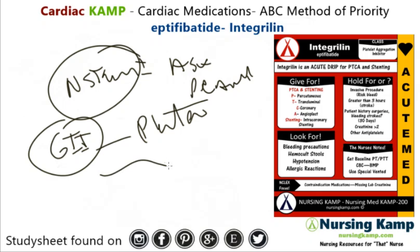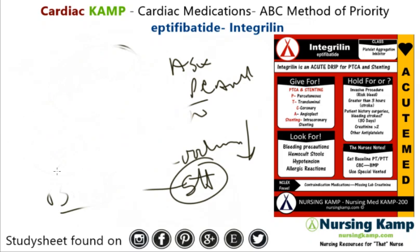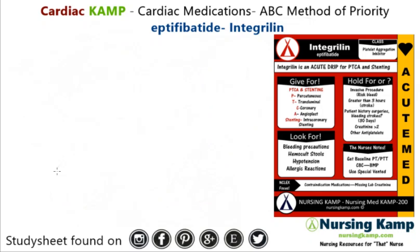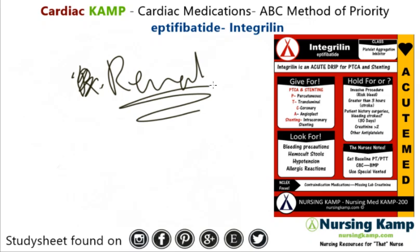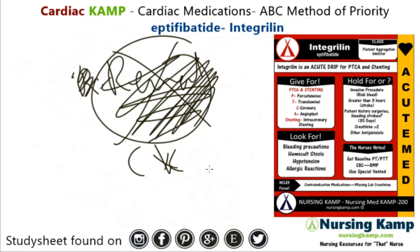They generally give a loading dose and start the patient on a drip. You monitor for bleeding, hypotension, check the stools for blood, and initiate bleeding precautions. It's excreted by the kidneys, so patients with chronic kidney disease should not receive it.